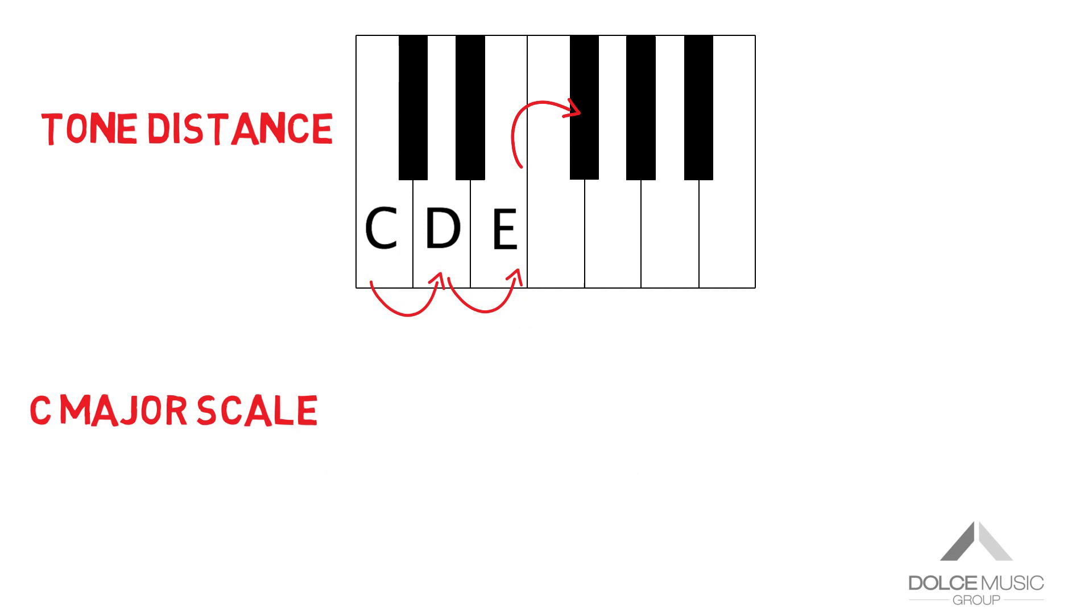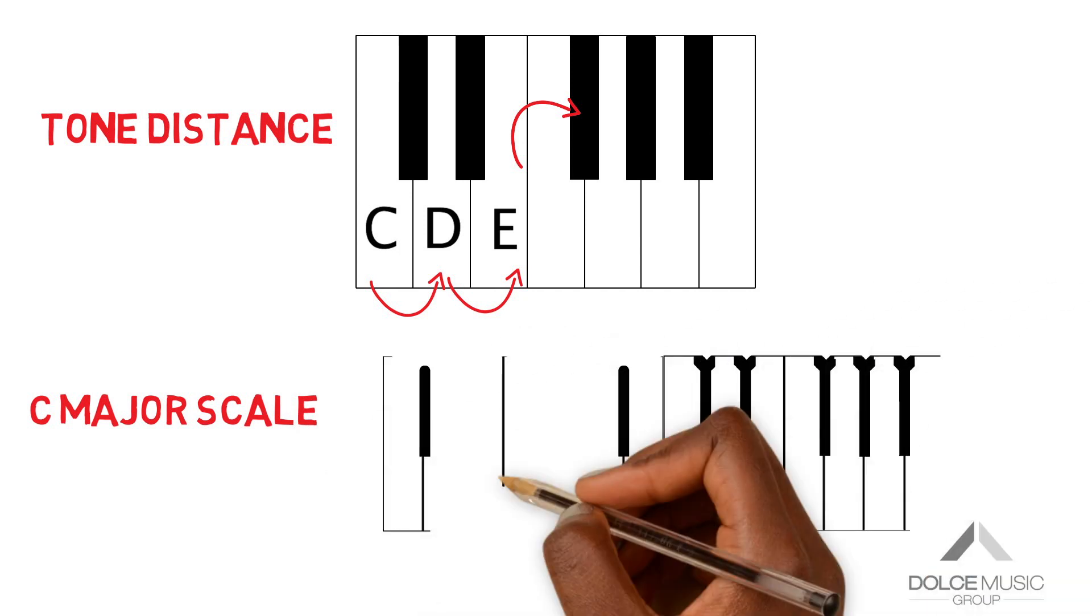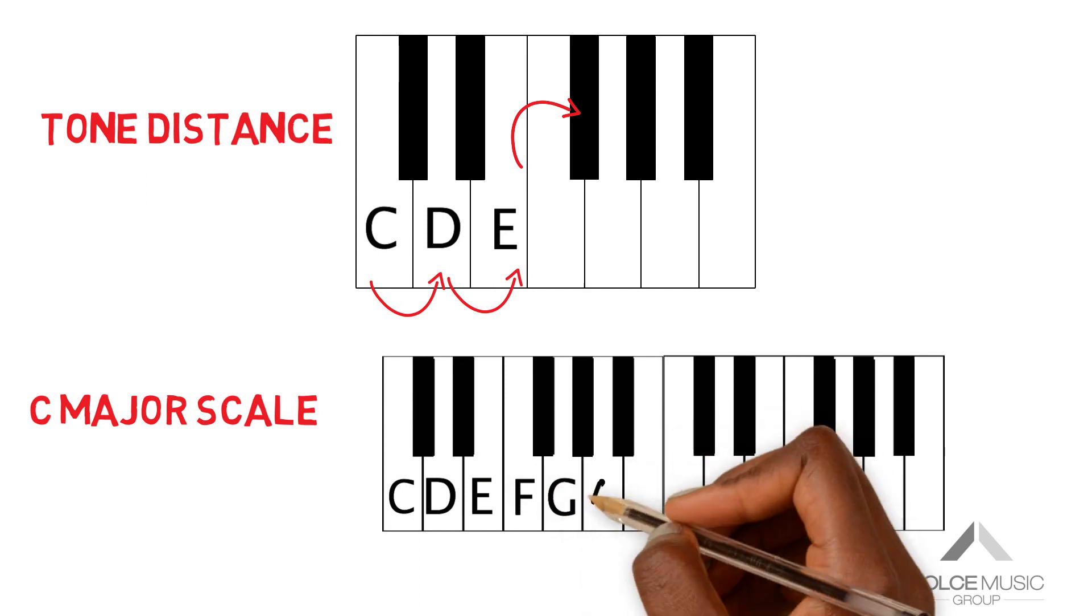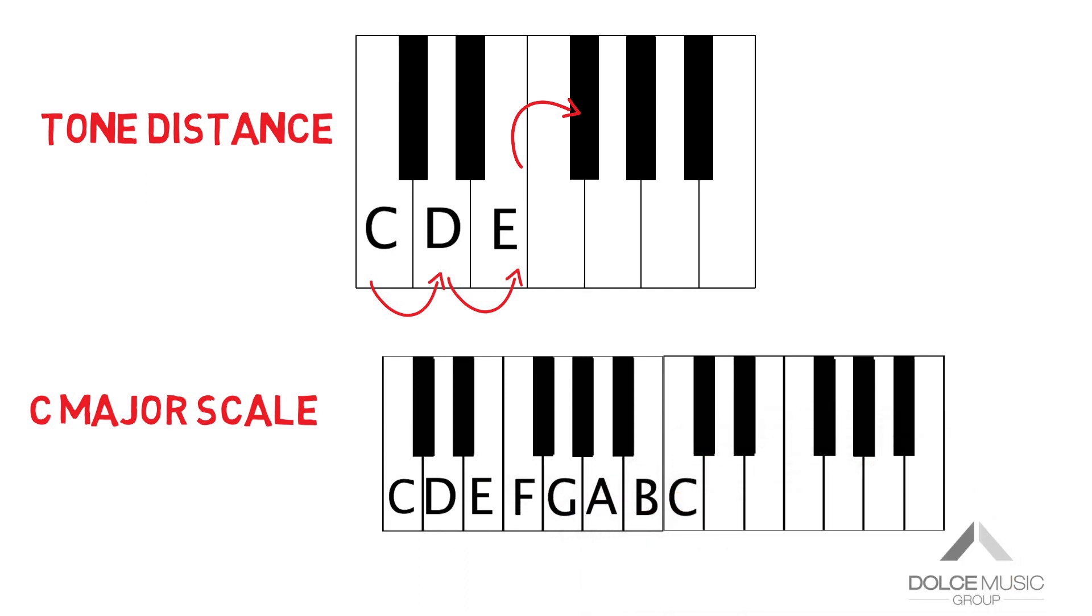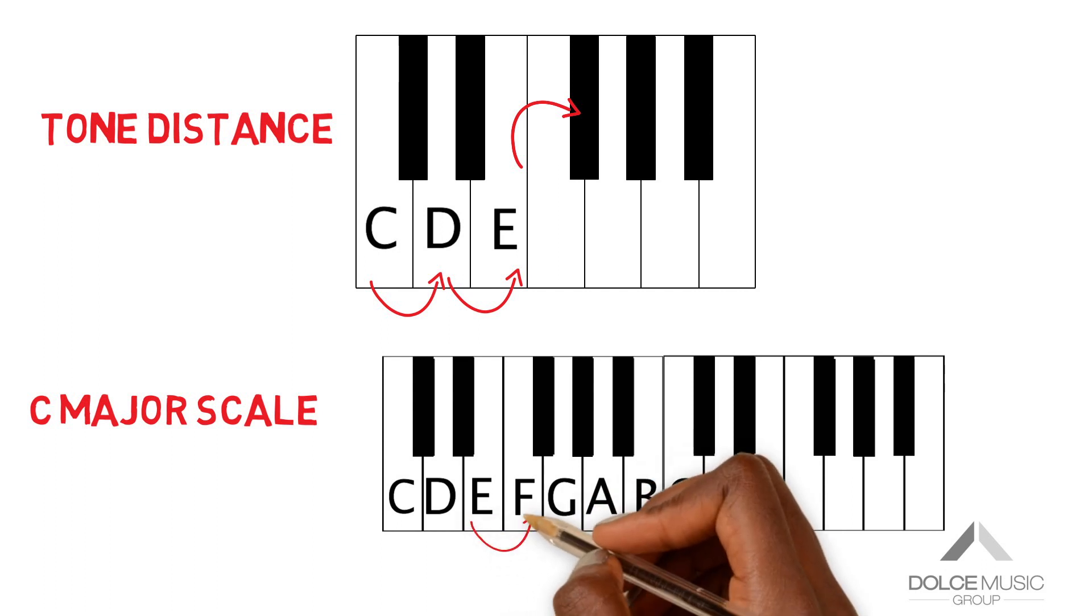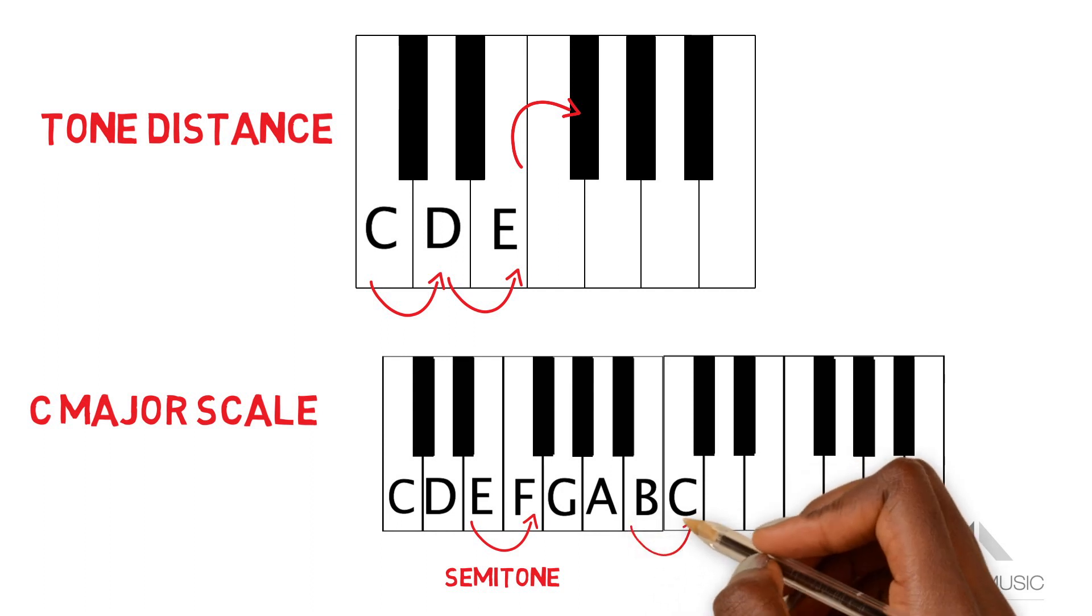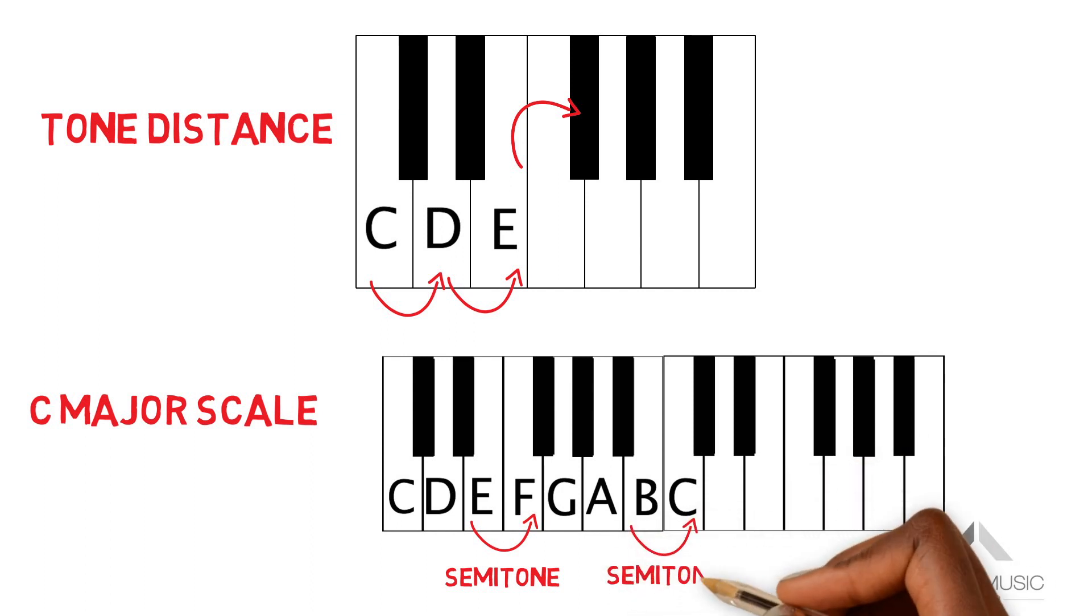If you play all the white notes from C to the next C to the right, one after the other, you will have played a scale. This particular scale is the scale of C major. C because that is the note it begins and ends on and major because of the way its semitones and tones are arranged. Here is the same scale C major with the semitones marked. All the other intervals are tones.